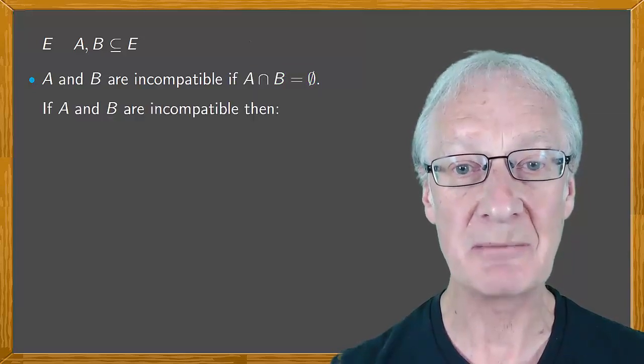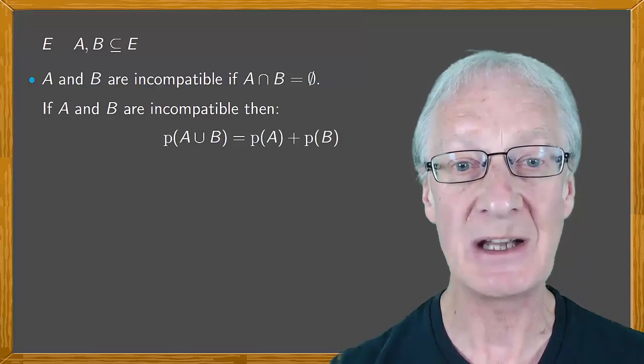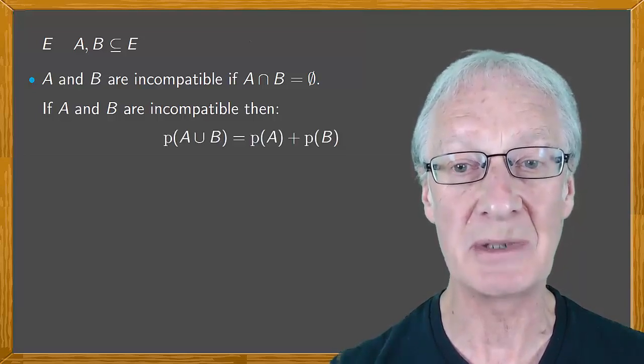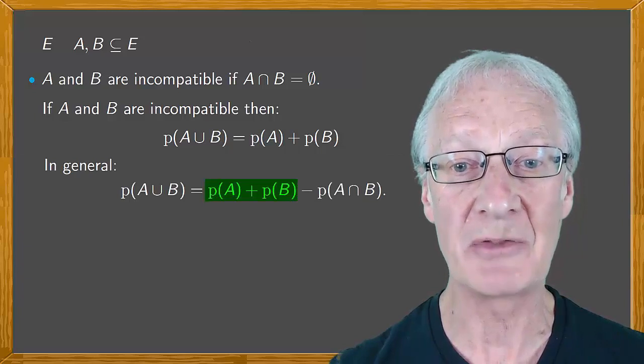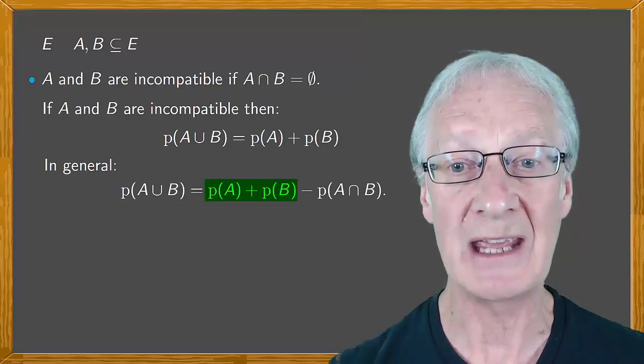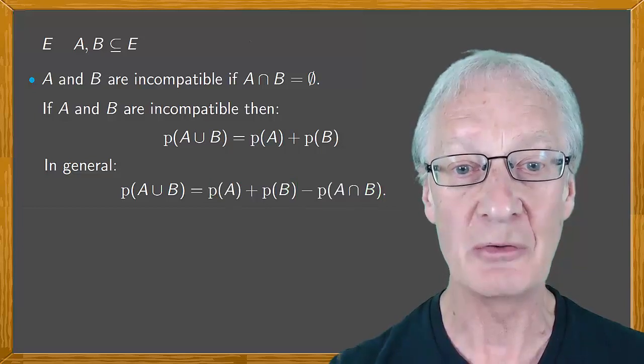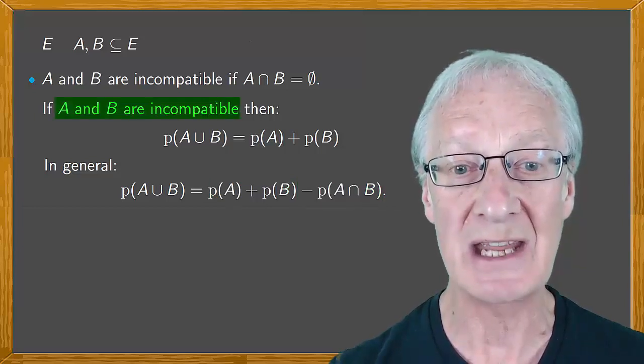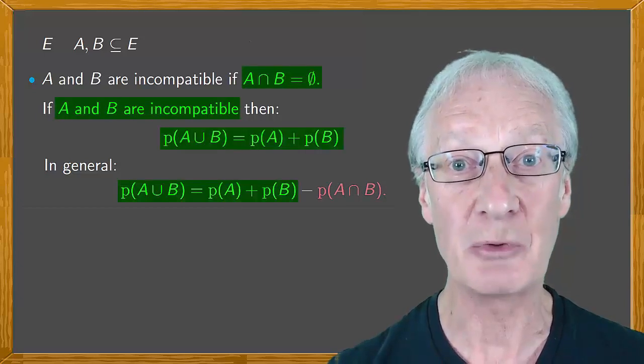If two events are incompatible by their definition of probability, the probability of the union of these is the sum of the probabilities of A and B. In general, the probability of the union is the sum of the probabilities of A and B minus the probability of the intersection. Note that in the particular case where events A and B are incompatible, this formula reduces to the previous one.